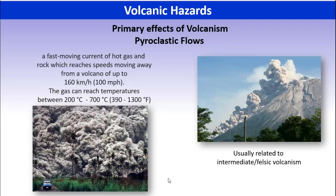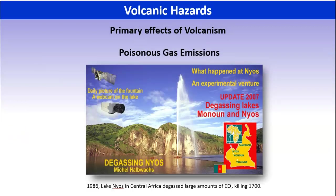Because the slopes of these intermediate-type volcanoes are usually steeper, pyroclastic flows run down the sides fairly quickly, pick up speed, and of course they're very hot. So if you're in the way, that's a problem. This is the type of hazard we associate more with an intermediate-type volcano. There'll be more information when you go to the USGS page.